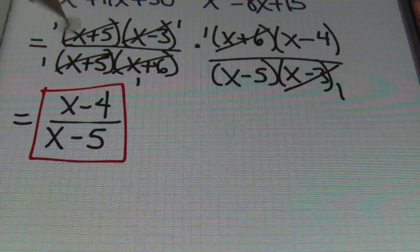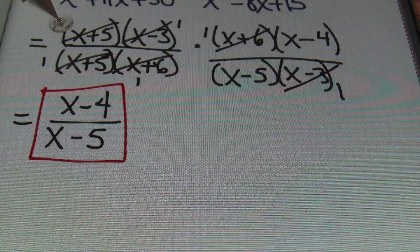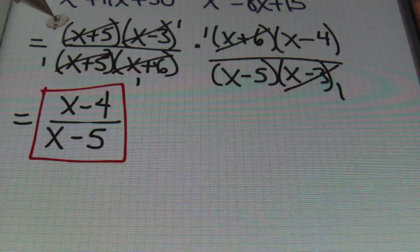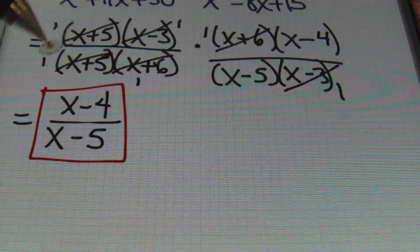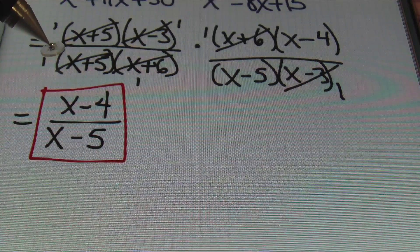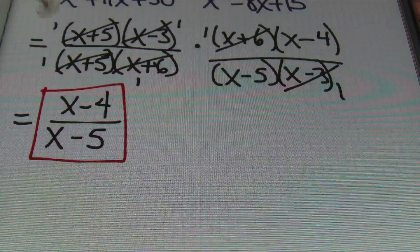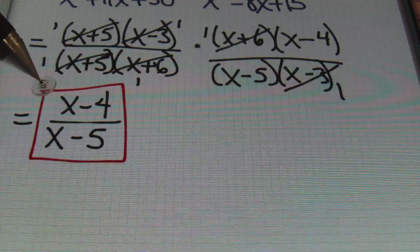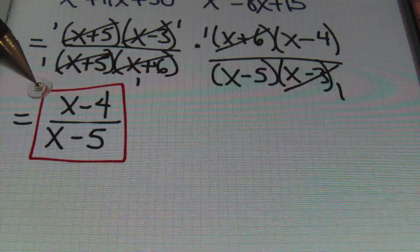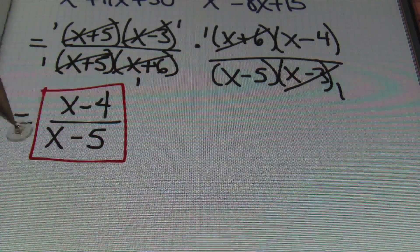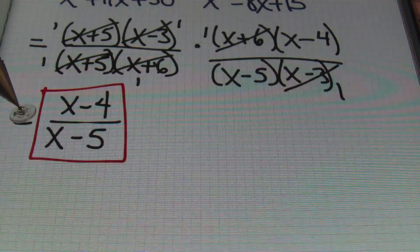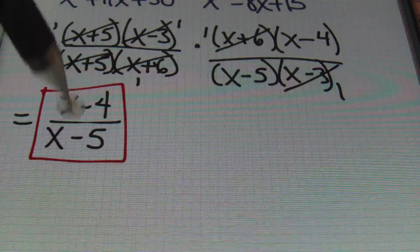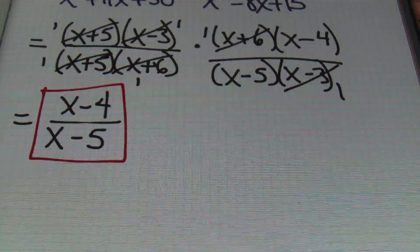It has to be exactly the same factor in order to cancel out. Notice how in the previous step we had x plus 5 over x plus 5 — those were exact factors, that's why we could cancel them. But x minus 4 and x minus 5 are not the same, so you can't cancel them out. So x minus 4 over x minus 5 is the answer.